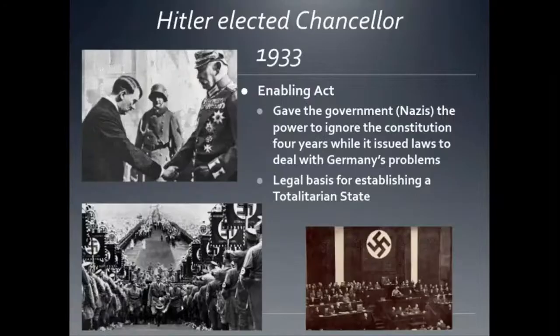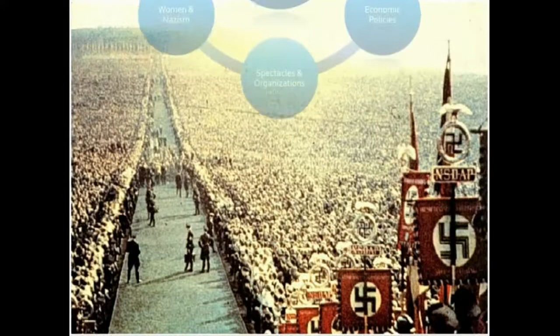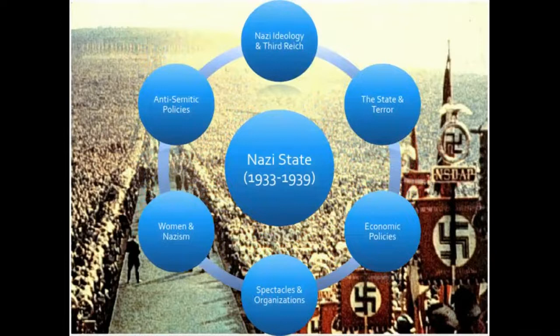Over the course of the next four years, Adolf Hitler and the Nazis would institute a series of political, social, economic, and cultural policies to tighten their control over Germany and create a new Nazi state. That is a conversation for next time. Thank you for listening and have a good day.